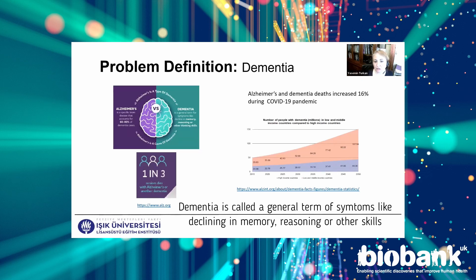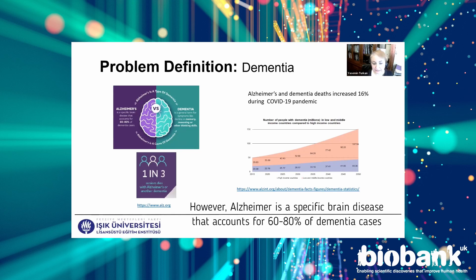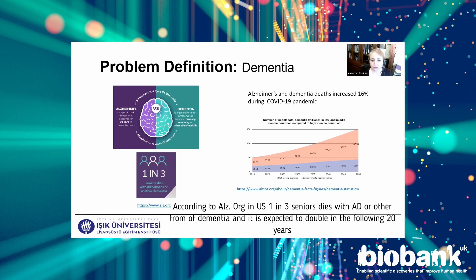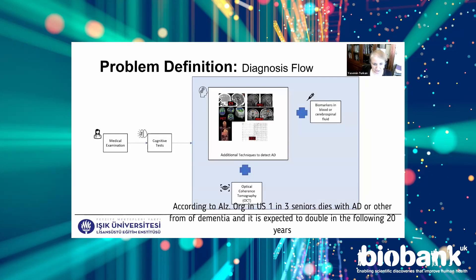Dementia is a general term for symptoms like decline in memory, reasoning, or other skills. However, Alzheimer's is a specific brain disease that accounts for 60 to 80 percent of dementia cases. According to the Alzheimer's organization in the US, one in three seniors dies with AD or other forms of dementia, and it is expected to double in the following 20 years.